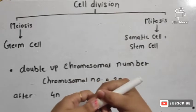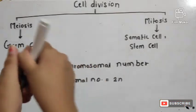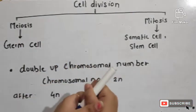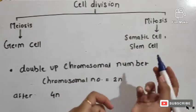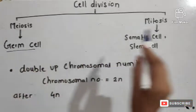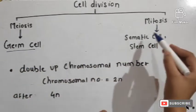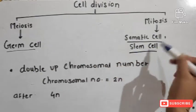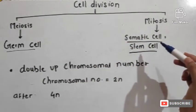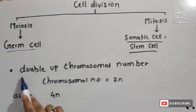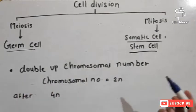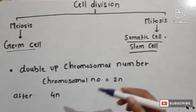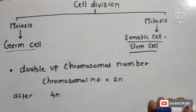Cell division is of two different types: meiosis and mitosis. Meiosis generally occurs in germ cells, and mitosis generally occurs in somatic cells and stem cells. During cell division, the chromosomal number doubles up.